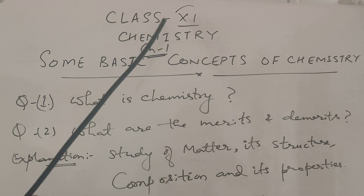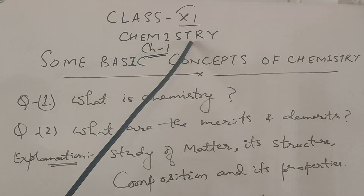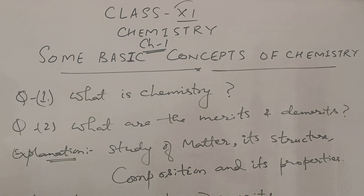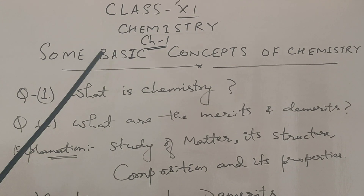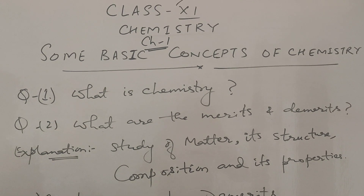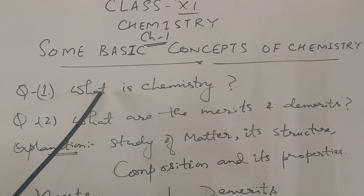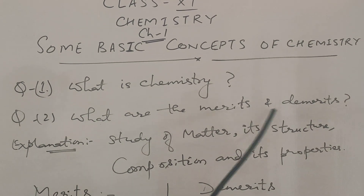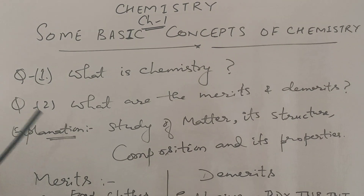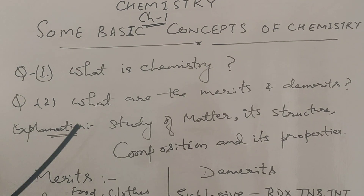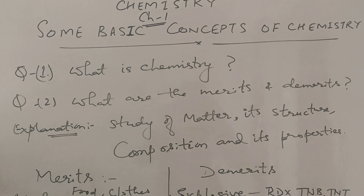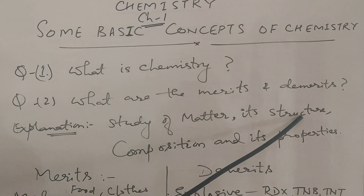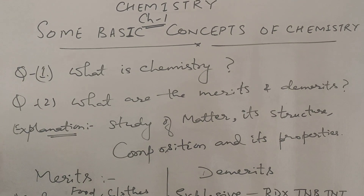Today we are going to start Class 11 Chemistry Chapter 1, that is 'Some Basic Concepts of Chemistry'. Before starting the chapter, we would like to know what is chemistry, and what are its merits and demerits. Chemistry is the study of matter — its structure, composition, and properties.